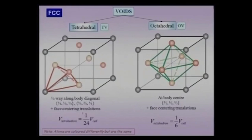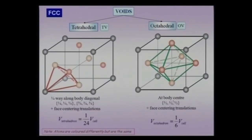In the cubic close-packed crystal, there are two kinds of voids: the octahedral void and the tetrahedral void. The tetrahedral void is located one quarter of the way along the body diagonal. When all symmetry operations of the CCP crystal operate on this void, they generate all remaining tetrahedral voids. There are 8 such tetrahedral voids per unit cell, and the volume occupied by the tetrahedral voids is 1/24 the volume of the unit cell.